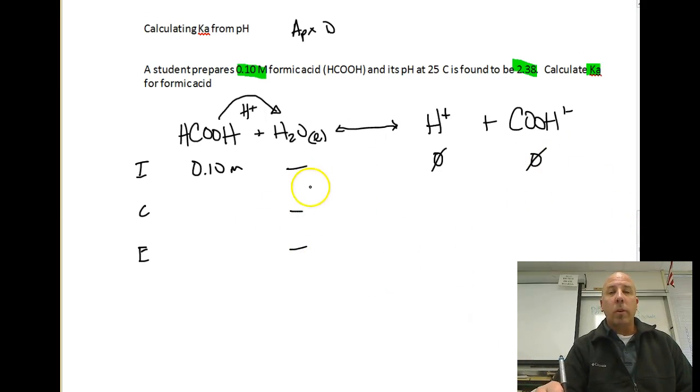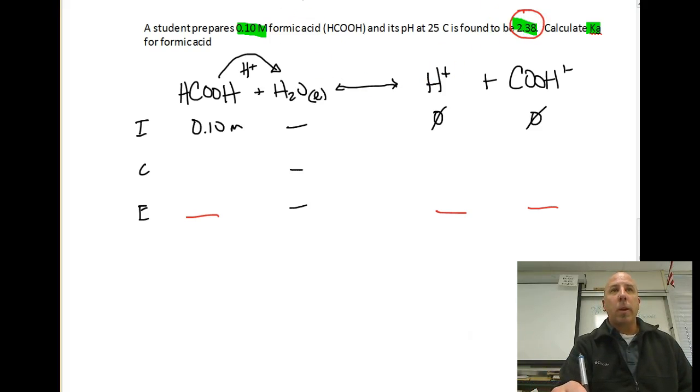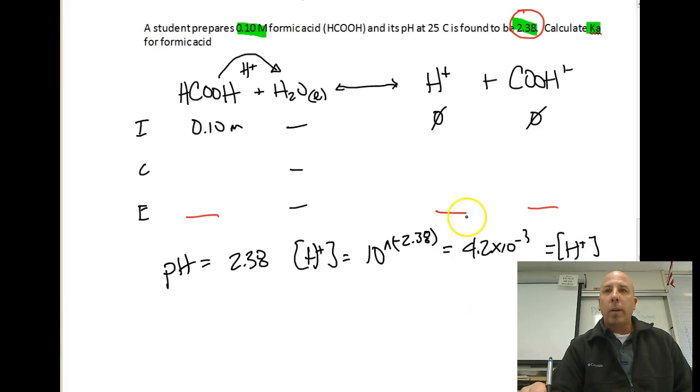Our initial concentration is 0.10 molar for our formic acid, and we don't have any hydrogen ions or formate ions yet. Then, what we need to do is figure out a way to get our equilibrium line, because if we can get our equilibrium line, that is what we use in our Ka expression. And we do have some information that could help us. We have pH of 2.38, and that is at equilibrium. So, if the pH is equal to 2.38, what I need to do is calculate the hydrogen ion concentration from this. I'm just going to take the antilog of that, 10 to the negative 2.38. And so, when we run that calculation, that's going to get us 4.2 times 10 to the negative third, and that's equal to my hydrogen ion concentration.